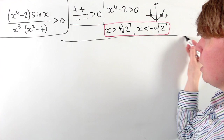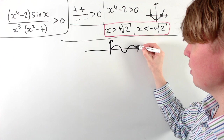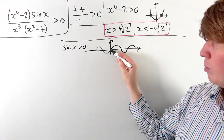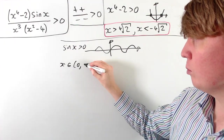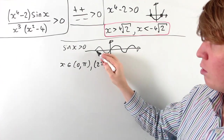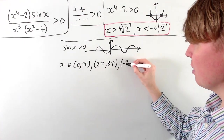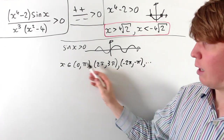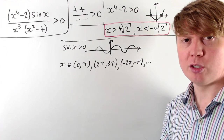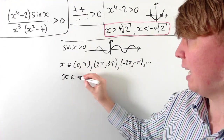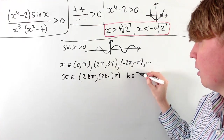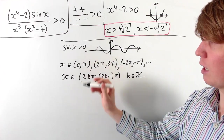Now let's look at sin(x). We can draw a graph of y equals sin(x) to visualize when it's positive and negative. Sin(x) is greater than zero between zero and pi, between two pi and three pi, and between negative two pi and negative pi. The left endpoints are all even multiples of pi and the right endpoints are all odd multiples of pi. So we can write this as x in the interval from 2k·pi to (2k+1)·pi, where k is any integer. This captures exactly where sin(x) is greater than zero.